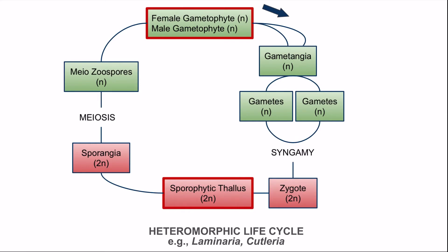The gametophyte has gametangia. In the gametangia, haploid gametes are formed. Haploid gametes after syngamy form a zygote. The zygote germinates to form the diploid sporophytic thallus, which is morphologically different from the gametophyte. In the sporophytic thallus, diploid sporangia are present. In the sporangia, after meiosis, haploid meozoospores are formed, which germinate to form the haploid thallus.